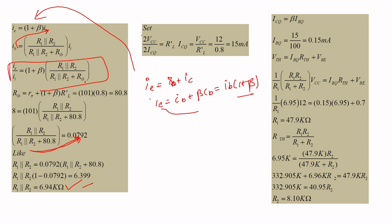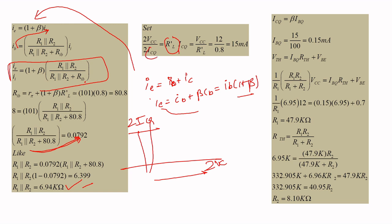The maximum voltage swing is 2VCC and maximum current swing is 2ICQ. Since ΔV / ΔI = RL_dash, we can find ICQ = VCC / RL_dash = 12 / 800 = 15 milliamps.